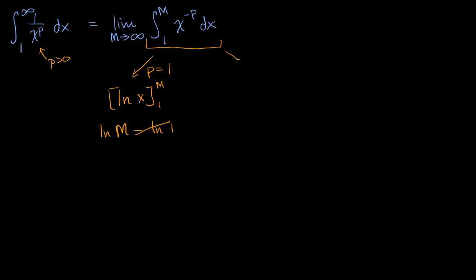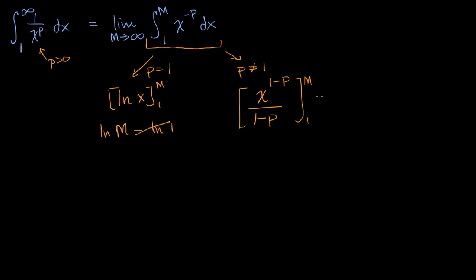Now let's think about the situation where p does not equal one. There we're essentially reversing the power rule from basic differentiation — we increment the exponent. So the antiderivative of x to the negative p is x to the negative p plus one, which we can write as x to the one minus p, divided by one minus p, evaluated from one to m. This gives m to the one minus p over one minus p, minus one to the one minus p over one minus p.